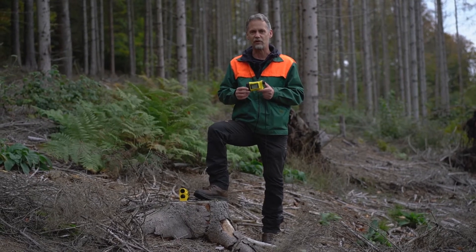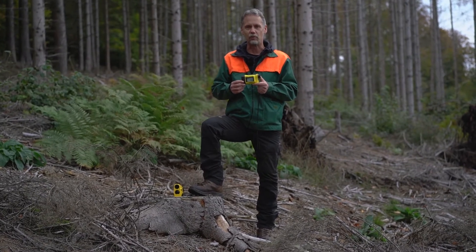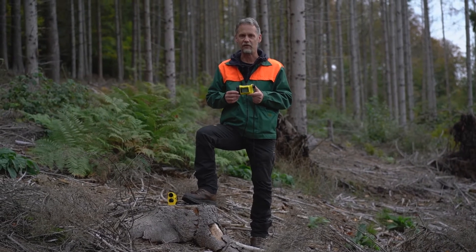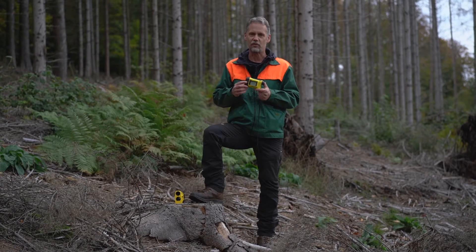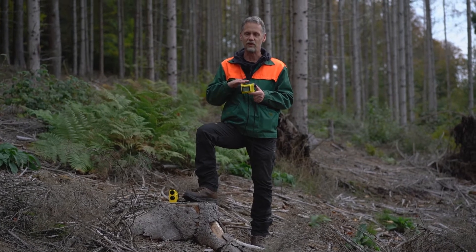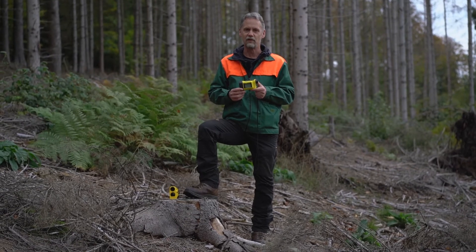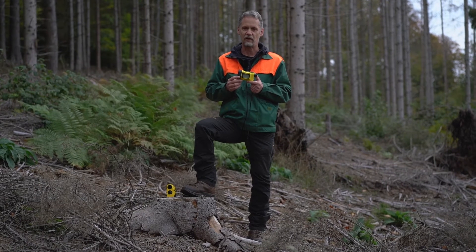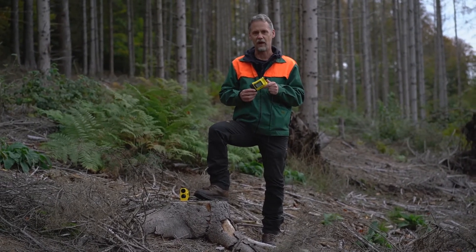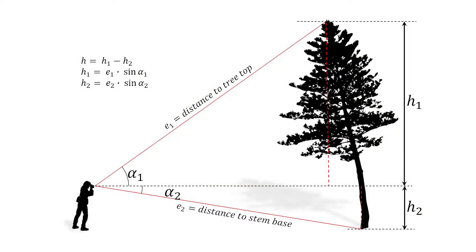For the measurement of tree heights, such devices usually provide two different measurement modes. One is the known three-point measurement, where we measure a horizontal distance and angle to the top and to the base of the stem. The second measurement mode is specific to laser instruments: a two-point measurement approach where we measure the distance to the tree top and the inclination angle, and the distance to the base of the stem and its inclination angle. The height is then calculated by multiplying the slope distance by the sine of the inclination angle.